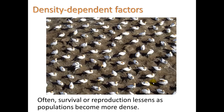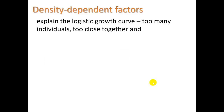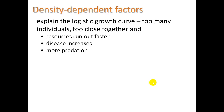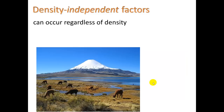Let's take a look at factors related to the density of the population. Often, survival or reproduction lessens as populations become more dense, and this can explain the logistic growth curve stabilizing. Too many individuals too close together causes resources to run out faster, disease to increase, and greater predation — explaining that S-shaped curve.